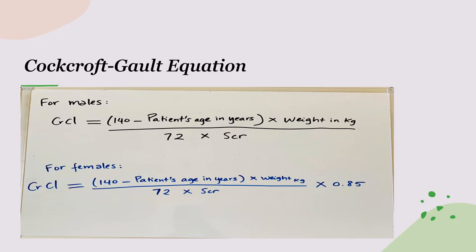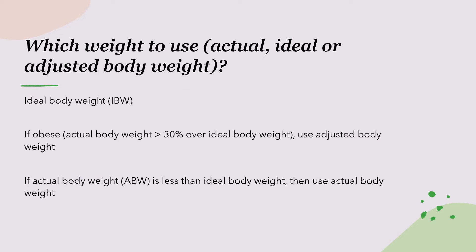Where it gets confusing is the weight in kilograms — which weight do you use? Do you use the actual body weight given in the problem, the ideal body weight, or the adjusted body weight? In general, we use ideal body weight. However, if the patient is obese — meaning their actual body weight is greater than 30% over their ideal body weight — then you use the adjusted body weight. If their actual body weight is less than their ideal body weight, then you use the actual body weight.